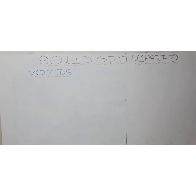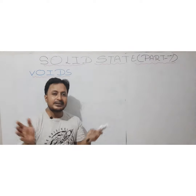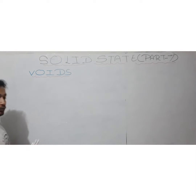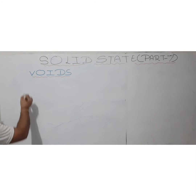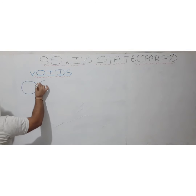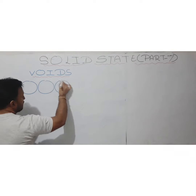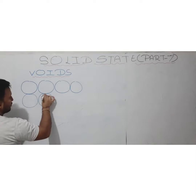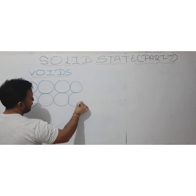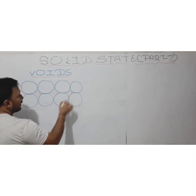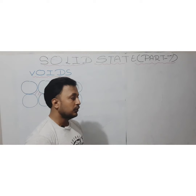When we talk about voids, it is related to the packing in a crystal lattice. As discussed in previous videos, if we consider atoms in the form of spheres in a crystal lattice, then all the space cannot be occupied by the atoms because of their spherical nature — some space will always remain empty.